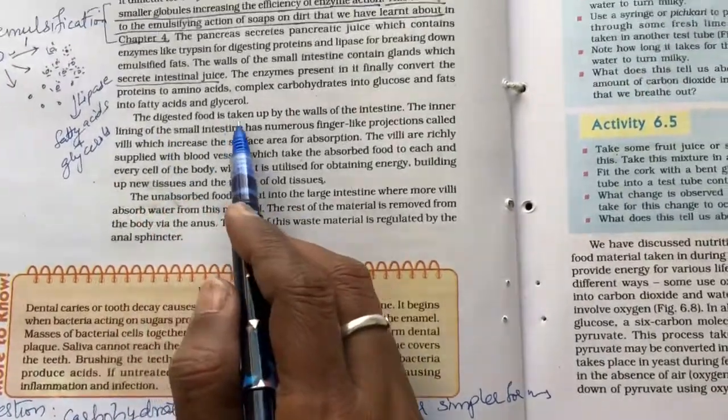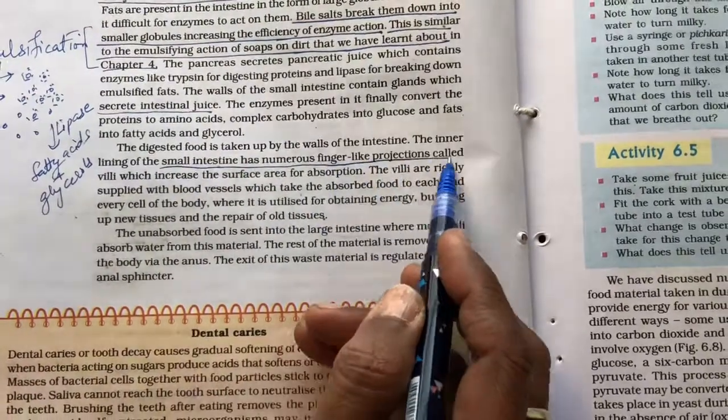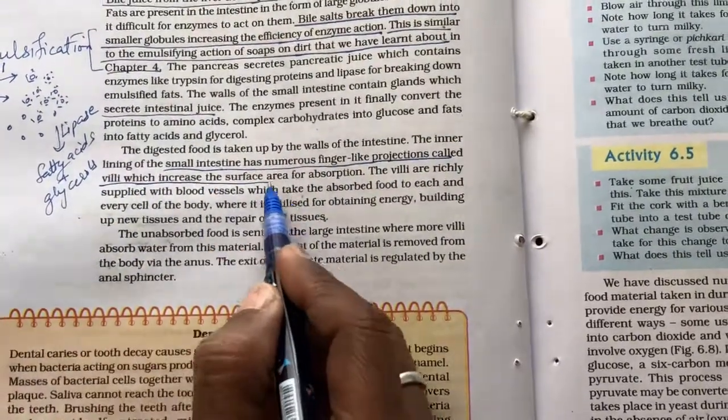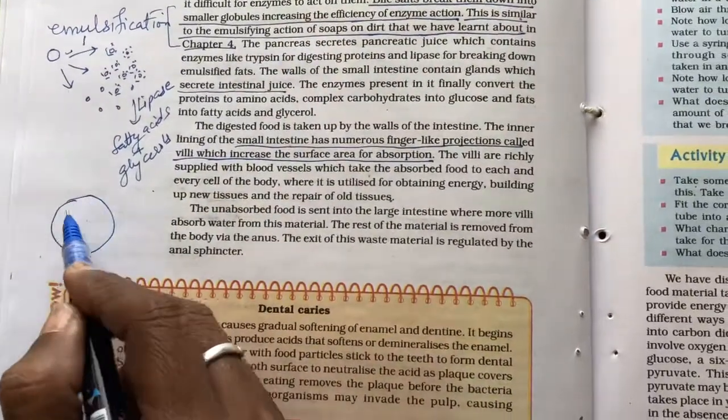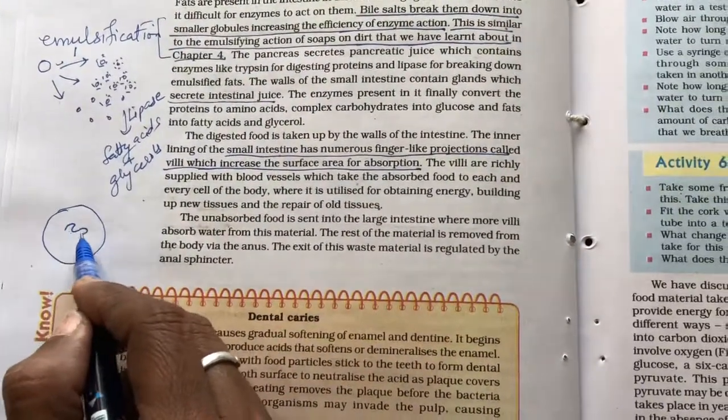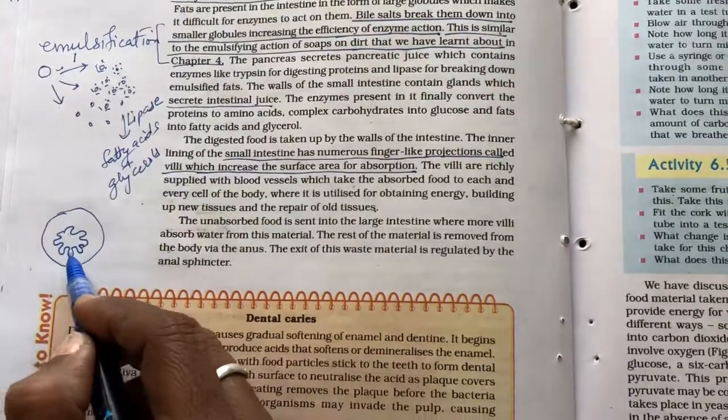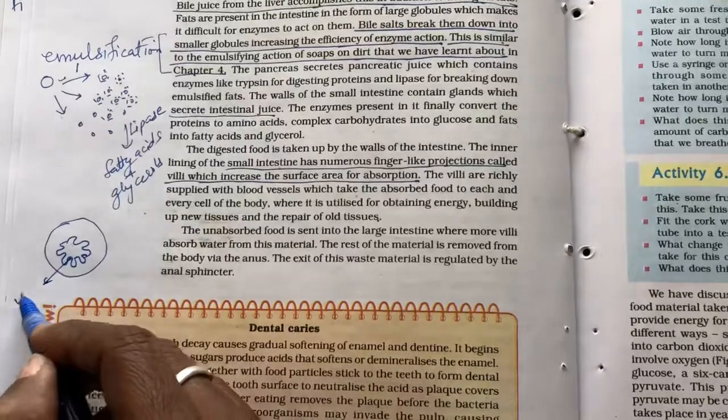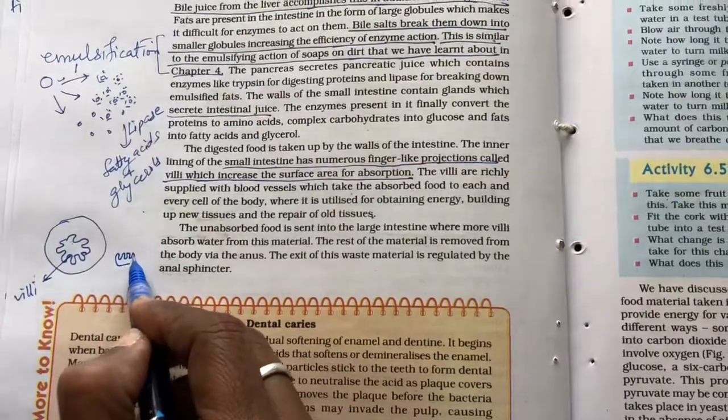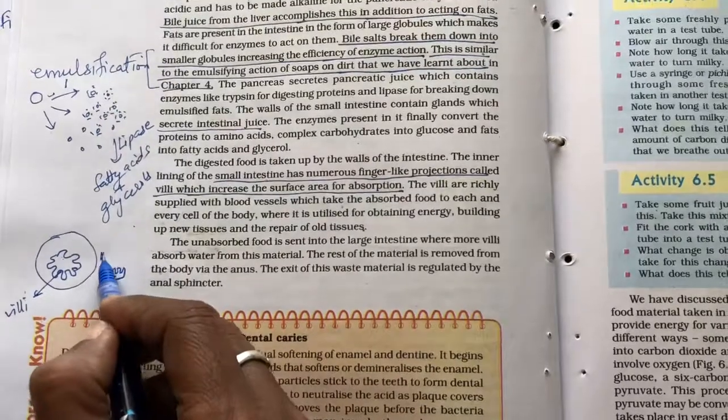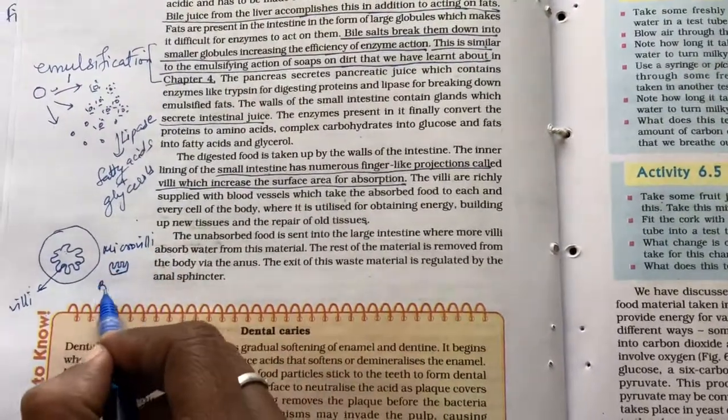The digested food is taken up by the walls of intestine. The inner lining of the small intestine has numerous finger-like projections called villi which increase the surface area of absorption. What are villi? Within the intestine there will be some these kind of inner folds. These are called villi. Now each villus will further be having some microvilli like this. These are called microvilli or brush border.